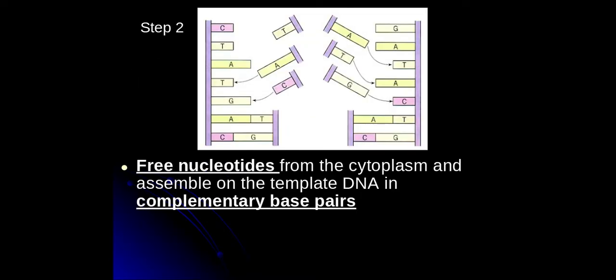Free DNA nucleotides that are free in the cytoplasm of the cell come alongside their complementary base pairs. So wherever I've got a G exposed, a C will come alongside it; wherever I've got a T, I'll get an A, so on and so forth. They line up along their complementary base pairs.